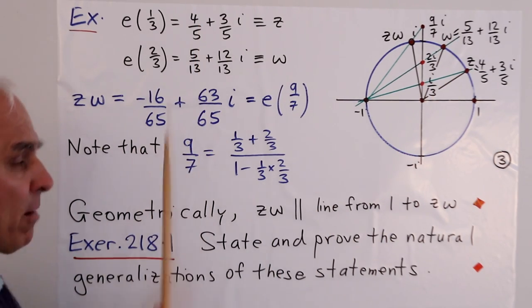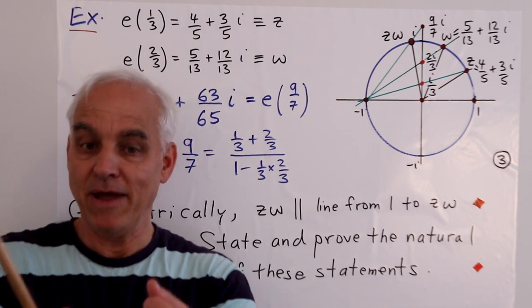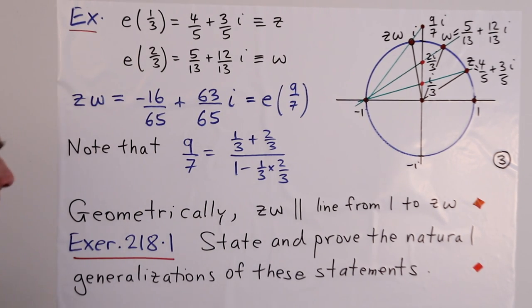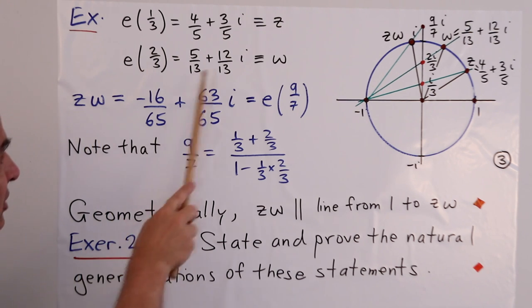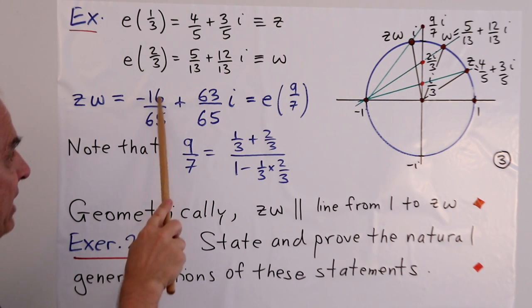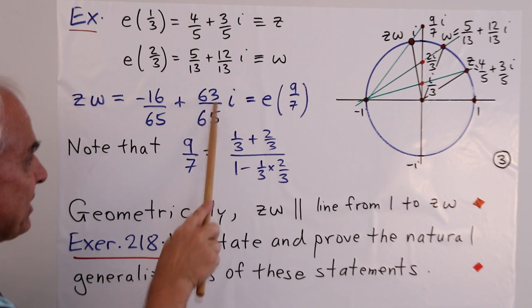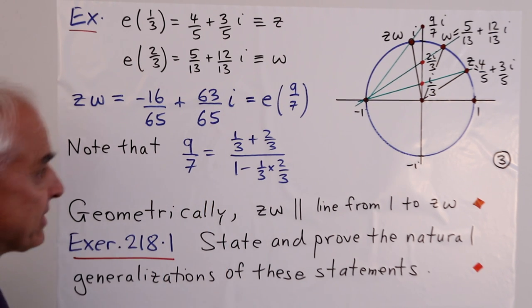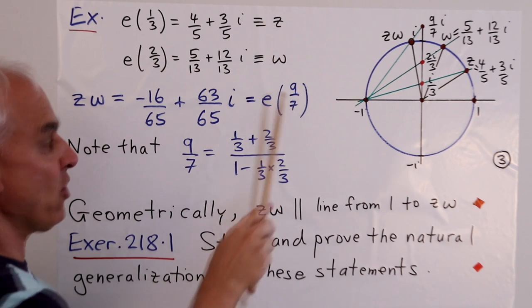We can take these two complex numbers and multiply them algebraically because we know how to multiply complex numbers. I'll leave it to you to check that the product of these two things is -16/65 + 63/65i. You can further check that that's actually e(9/7).